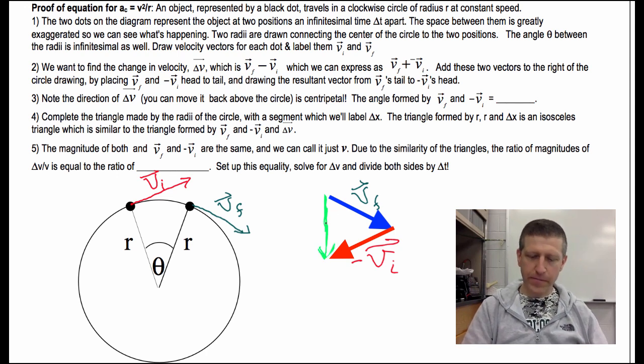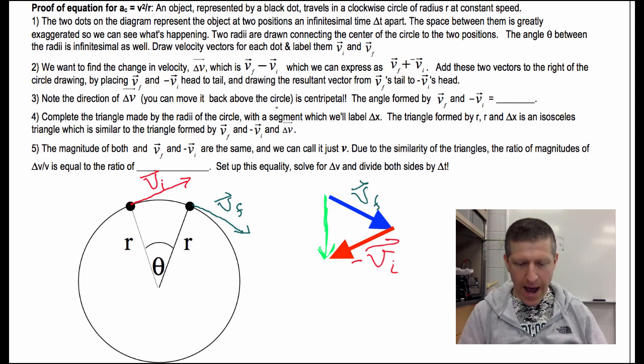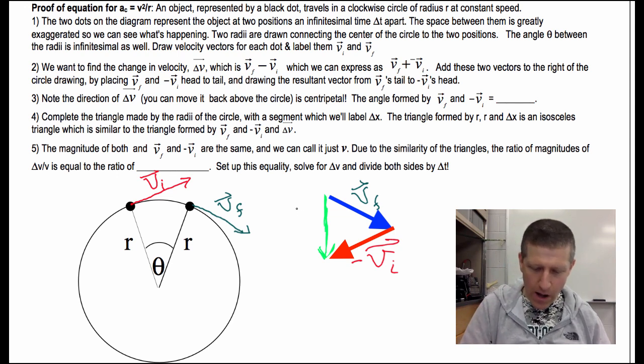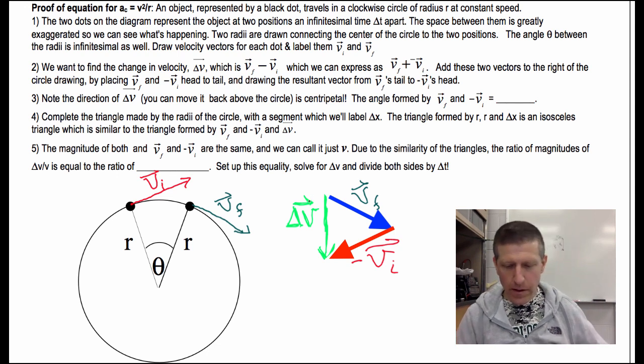And here is the sum of the two vectors. So this is the resultant right there in green. And there we go. And this is what I'm going to call delta V because it's the change. V final minus V initial. It's delta V. Cool.